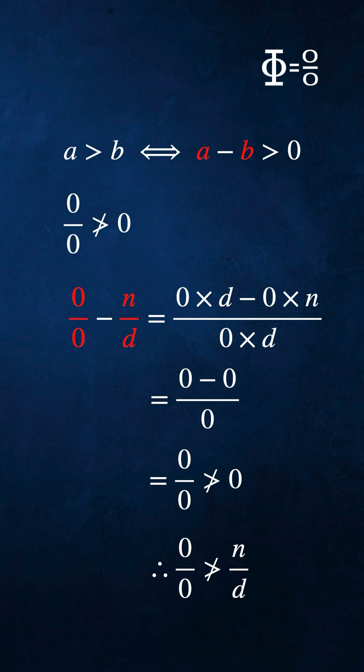We write a minus b as 0 over 0 minus n over d. Now 0 over 0 minus n over d equals 0 times d minus 0 times n over 0 times d.